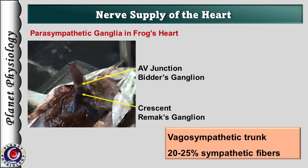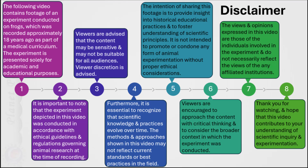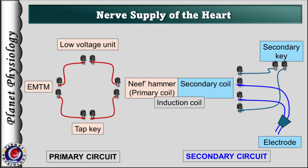But before that, kindly read the disclaimer. To obtain the effects of vagal stimulation, it is necessary to deliver multiple stimuli. Hence, Nipps hammer is taken into the primary circuit, and of course the EMTM as well, to note the point of stimulation. Rest of the circuit is as usual.